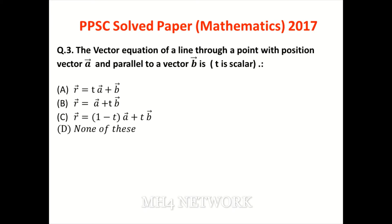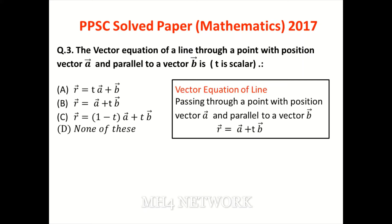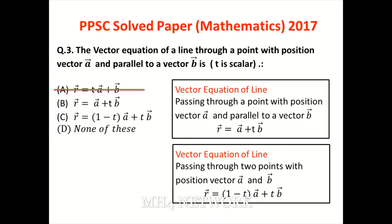Question number three: the vector equation of a line through a point with position vector A and parallel to vector B. Agar line ek point se pass kare jiska position vector A ho aur vector B ke parallel ho, toh equation option B banti hai. Option A mein passing through B hai aur parallel to A hai — woh galat hai. Option C tab banti hai jab doh points se pass kare — so option B correct answer hai.